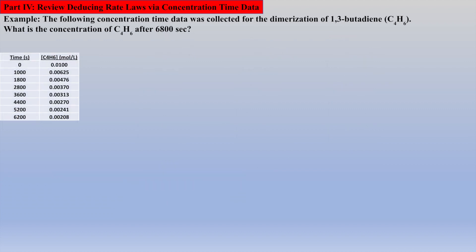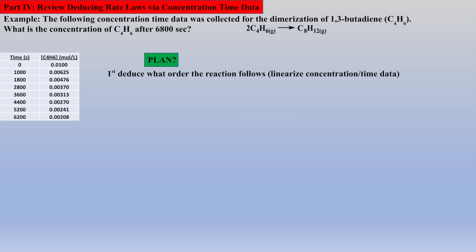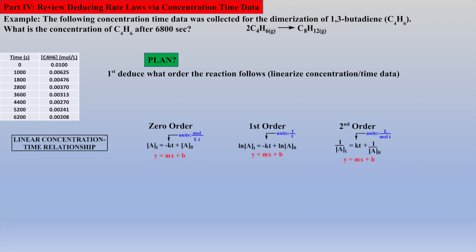So let's work several exercises that demonstrate these principles. Here we are given concentration time data for the dimerization of 1,3-butadiene, and asked for the concentration of reactant remaining after a certain amount of time. It is first worth our efforts to understand the dimerization reaction, which is simply two molecules of 1,3-butadiene reacting in a pericyclic manner to afford the cyclic compound shown via a Diels-Alder reaction. So the plan is to first deduce the order of the reaction by linearizing the concentration time data — in other words, which equation will afford a linear plot?